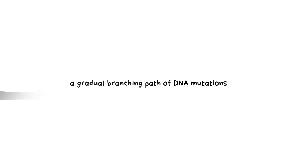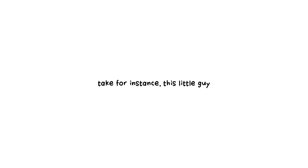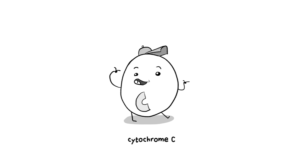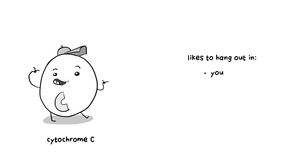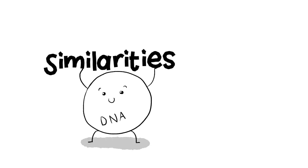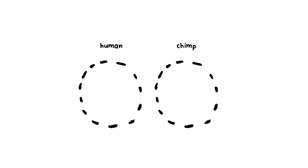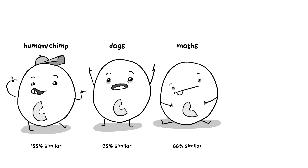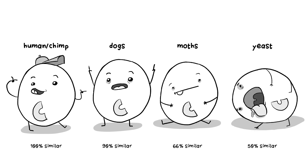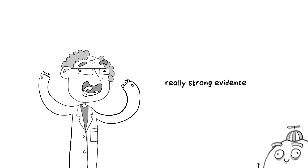Biologists expected to see a gradual branching path of DNA mutations from species to species, and they did find some success. Take cytochrome C — a gene you can find in humans, chimpanzees, dogs, moths, even yeast. It's one of the most commonly sequenced portions of DNA, so it's a great test case. Comparing human cytochrome C to chimpanzee cytochrome C, they look exactly alike. With dogs there's about 90% similarity, moths about two-thirds, and yeast only about half. Just what we'd expect — strong evidence of common ancestry.